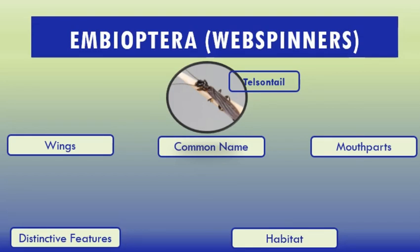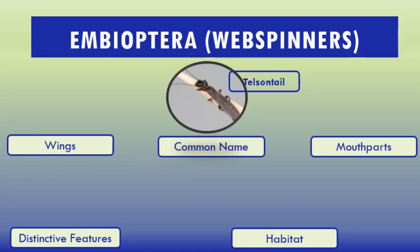Species are very similar in appearance, having long flexible bodies, short legs, and only males have wings. Web spinners are gregarious — they live in groups, living sub-socially in galleries of fine silk which they spin from glands on their front legs. Early entomologists considered web spinners to be a group within the termites or neuropterans. The currently most widely accepted ordinal name is Embioptera, suggested by Arthur Shipley in 1904.